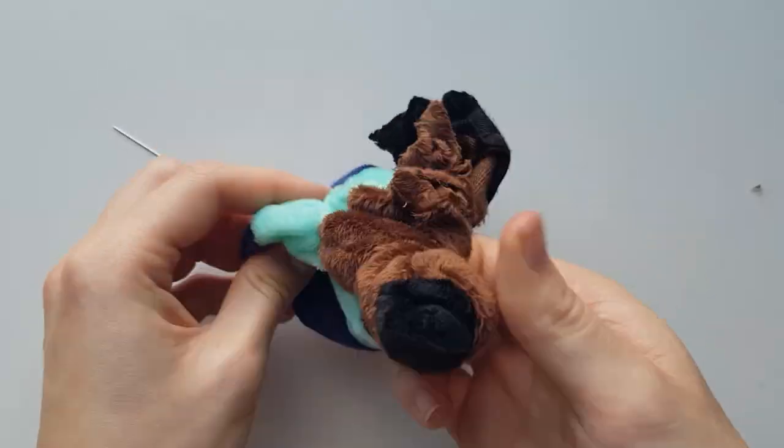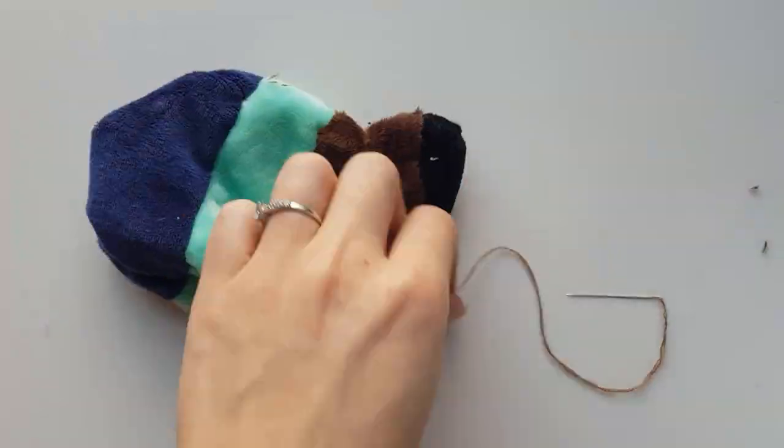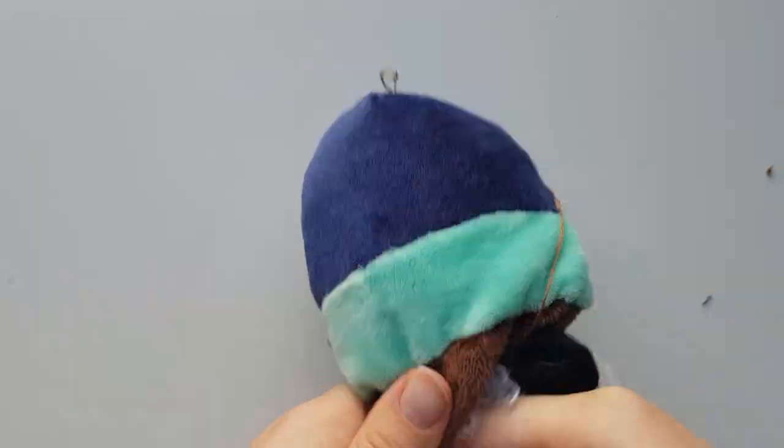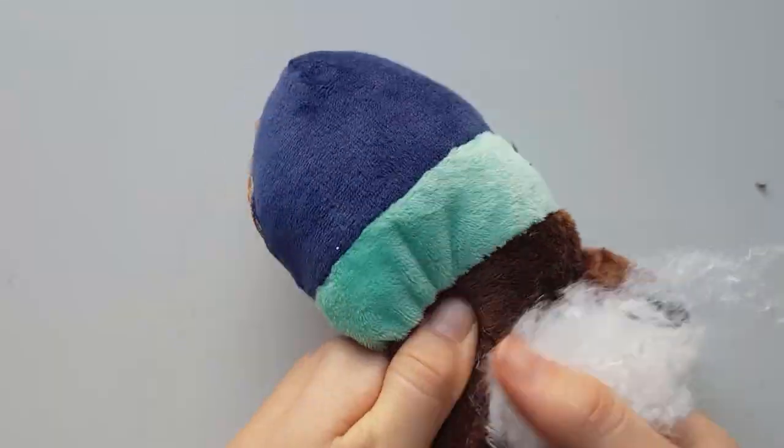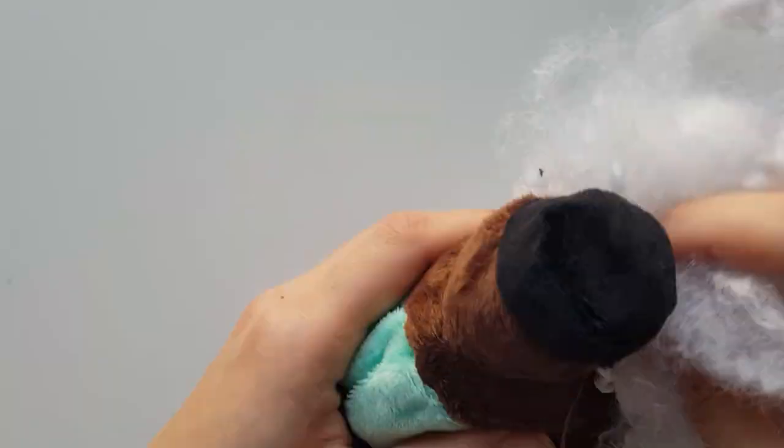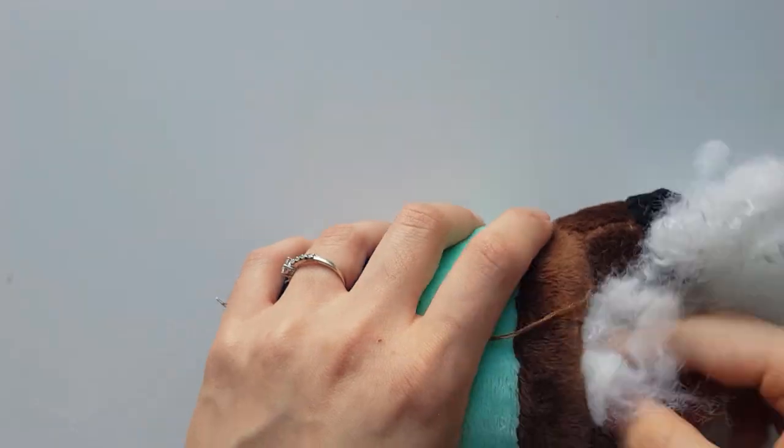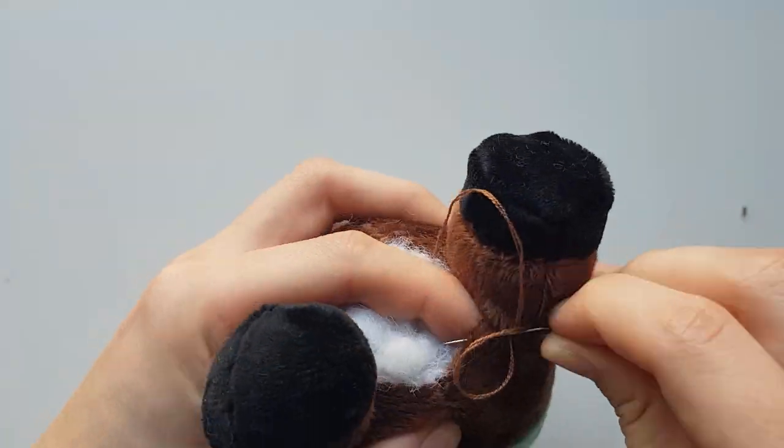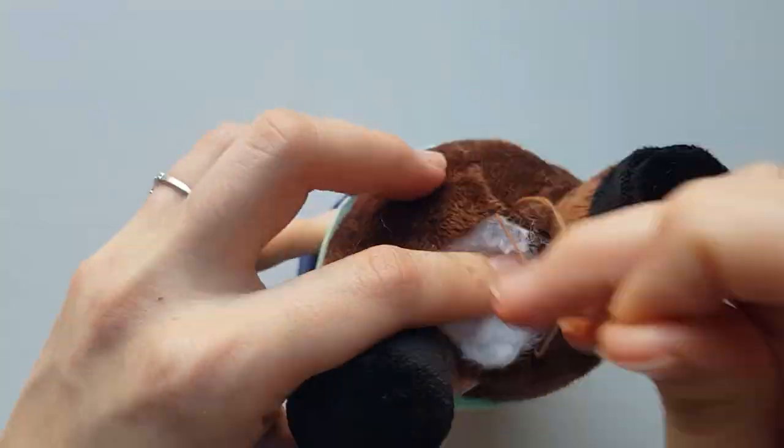Once both legs are joined, flip it upright using the gap in the middle and stuff it. Once done, close off the gap with an invisible stitch.